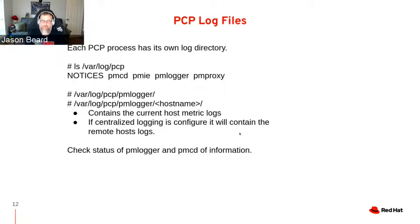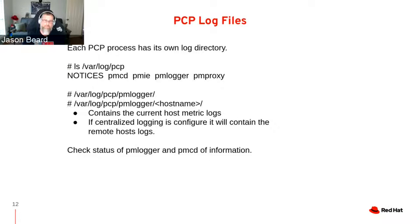Log files are in /var/log/pcp. Each process has its own directory. PMlogger itself by default creates directories with host names so they're all separated for you. The default configuration for the logger is 14 days — you can increase it to 30, 60, or however much you want. You will have to think about space requirements for logging for longer periods of time. You can also check the status of PMlogger and PMCD information.